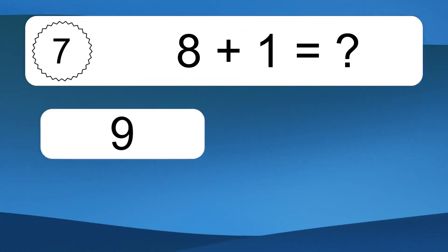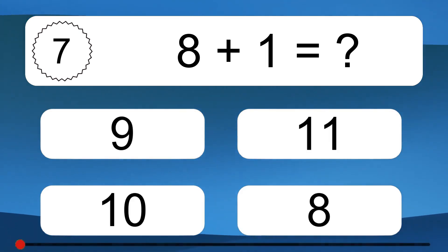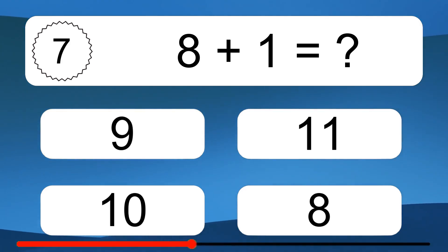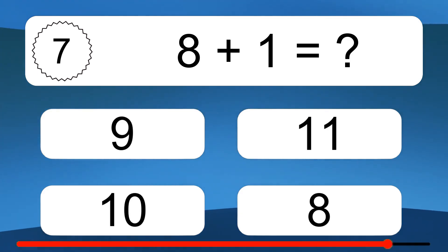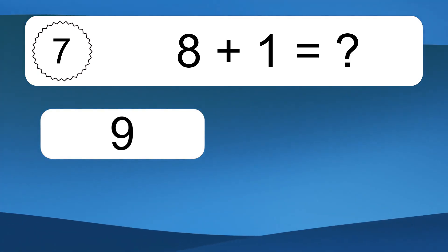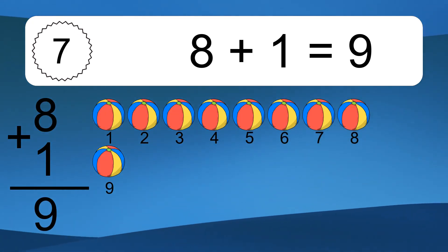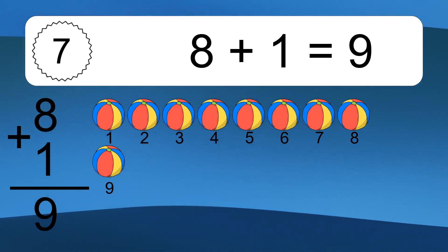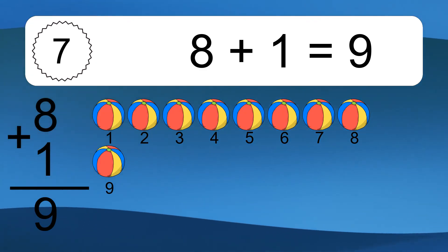8 plus 1 equals what? 8 plus 1 equals 9. Let's count it. 1, 2, 3, 4, 5, 6, 7, 8, 9.